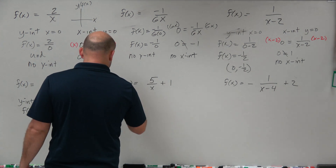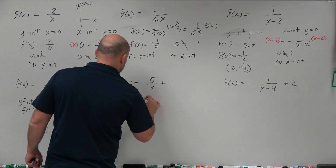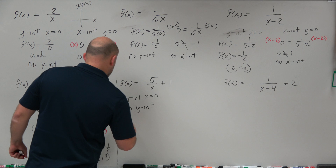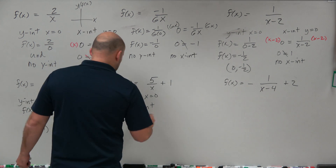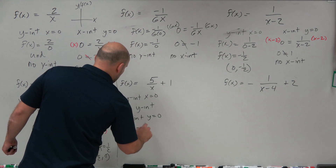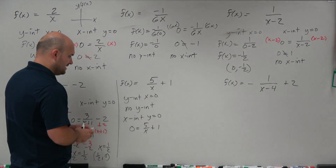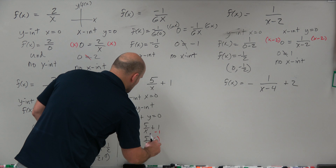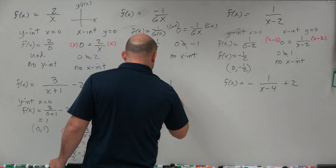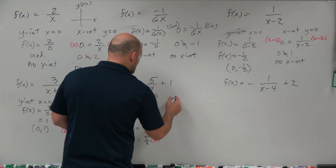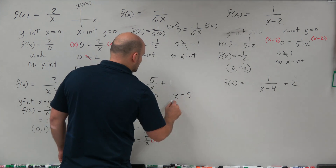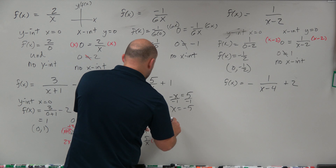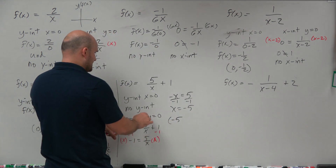For the next one, y-intercept: x equals 0. I cannot plug 0 into the denominator, so there is no y-intercept. For the x-intercept, y equals 0: 0 equals 5 over x plus 1. Subtract 1 from both sides: negative 1 equals 5 over x. Multiply by x on both sides: negative x equals 5. Divide by negative 1: x equals negative 5. So the x-intercept is (-5, 0).